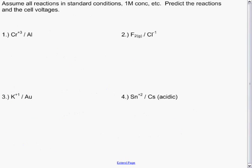The four sample questions. Assume all reactions in standard conditions, as we just said. Predict what reactions will occur using your table for the four possible types of electrochemical cells. So, a chromium plus three, an aluminum cell for the first one, a fluorine gas chloride cell.